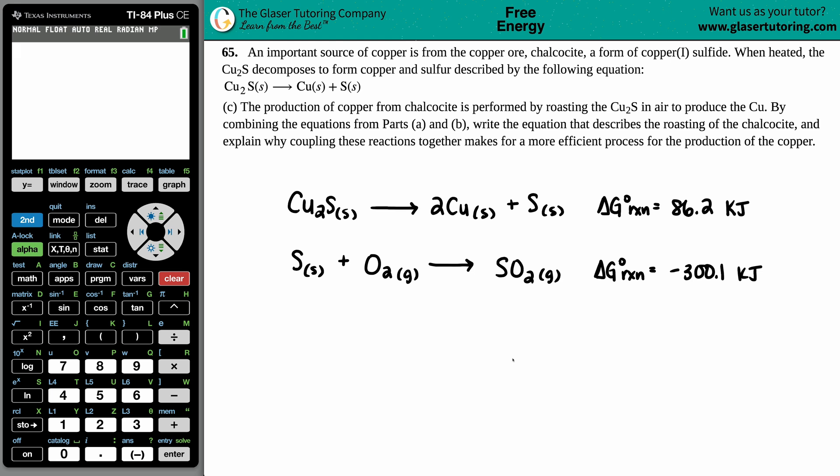Number 65. An important source of copper is from the copper ore chalcocite, which is a form of copper(II) sulfide. When heated, the Cu₂S decomposes to form copper and sulfur, described by the following equation: Cu₂S yields Cu solid plus S solid.